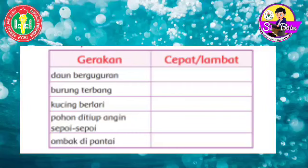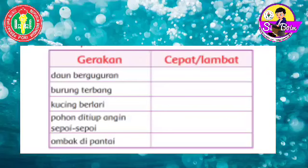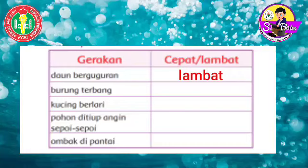Sudah selesai? Ayo kita cocokkan. Kita mulai dari gerakan berguguran, gerakan cepat atau gerakan lambat? Betul sekali, itu termasuk gerakan lambat. Selanjutnya, burung terbang, termasuk gerak cepat atau gerak lambat? Betul sekali, burung terbang termasuk gerakan cepat.